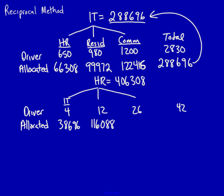26 divided by 42 multiplied times the amount of human resources that's 251,524. Add them across as a check. 406,308. It matches. We're in a good place.